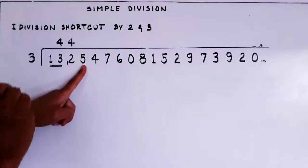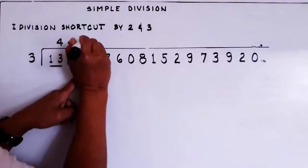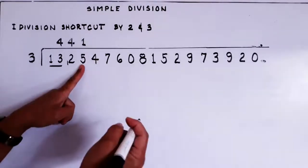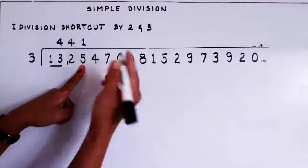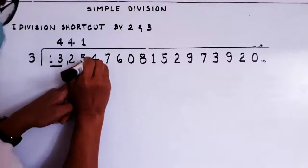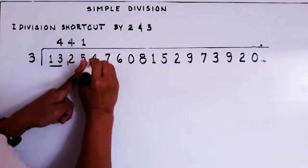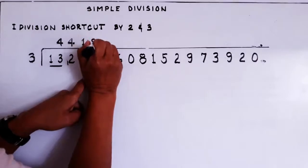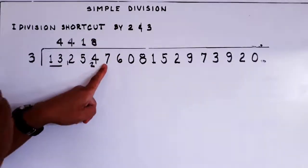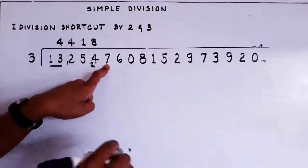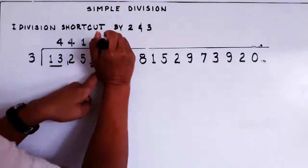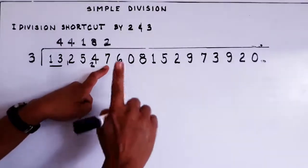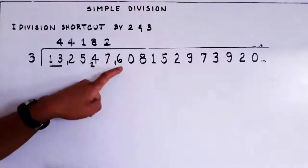Now 5 divided by 3 — we can get only one 3 from 5. Count from 3 up to 5: 3, 4, 5 — remainder is 2. Put the 2 next to the 4, so it becomes 24. We divide 24 by 3 — that is exactly 8. So we don't put 1 or 2 on the 7. Now divide 7 by 3 — how many threes from 7? Only 2, giving 6. Count from 6 to 7 — remainder is 1. Put the 1 next to the 6, making it 16.